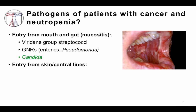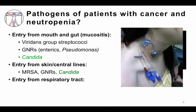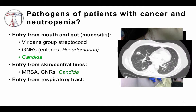Entry from the skin occurs when patients have central lines in place. We can see Staphylococcus aureus, Staphylococcus epidermidis, gram-negative rods, and Candida. For the respiratory tract, this patient has an Aspergillus mold infection. You can see on the CT scan an area of white — a nodule — and in the center some black, which is cavitation, an area where there is death of lung tissue and necrosis. That is a cavitary lung nodule due to Aspergillus, a mold type of fungi.